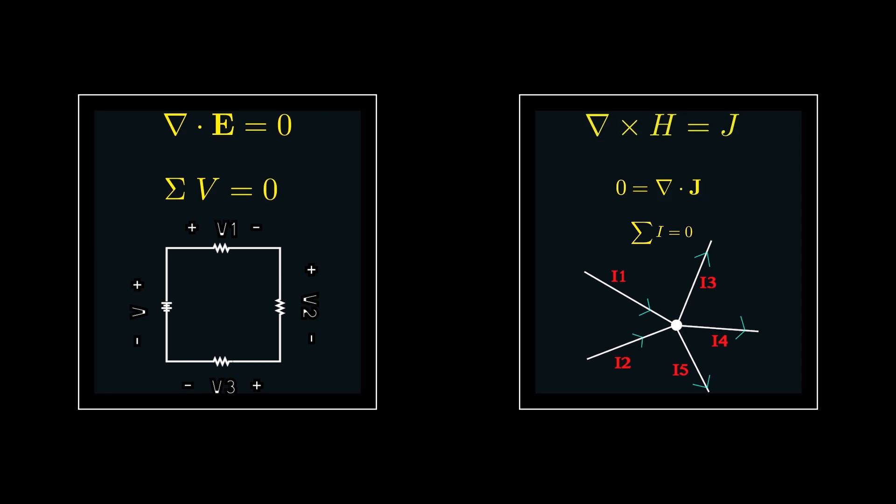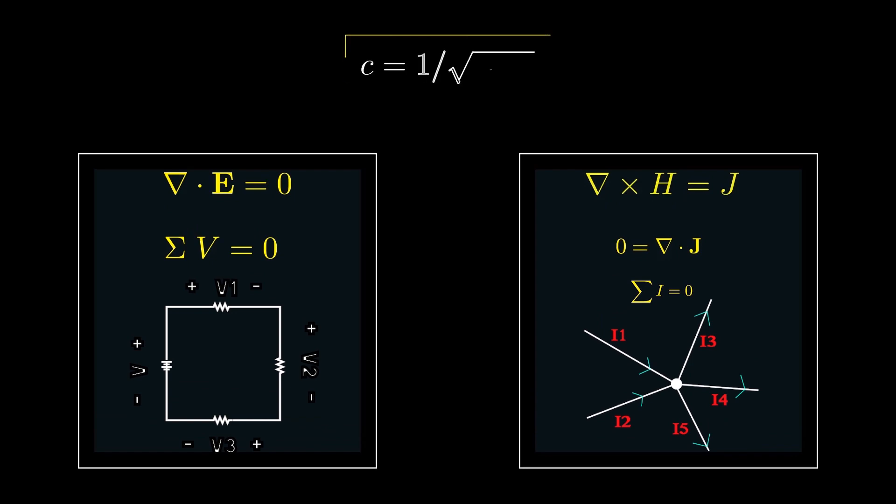Permittivity and permeability are two non-zero quantities, but approximating them with zero gives us a great advantage. We know that the speed of wave propagation is 1 over square root of mu nought epsilon nought. Setting one of them or both to zero means that the speed is infinity. So Kirchhoff voltage law and Kirchhoff current law are valid approximations of Maxwell equations as long as the circuit element dimensions are too small compared to the wavelengths of the signal, so we don't feel the finiteness of the speed of the wave.